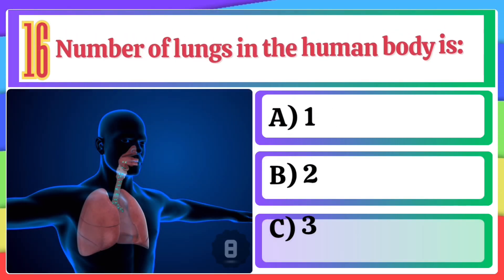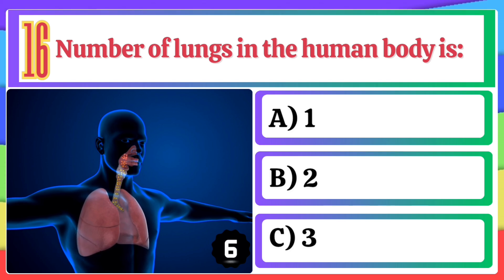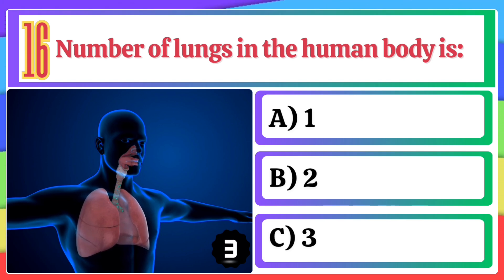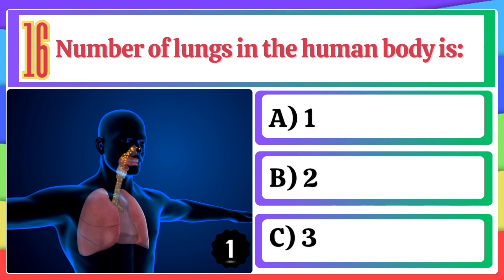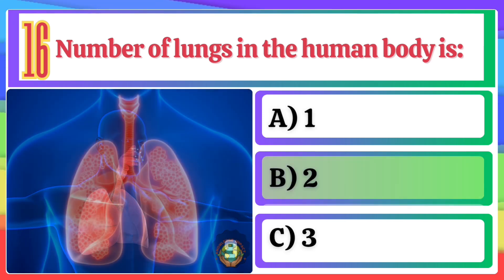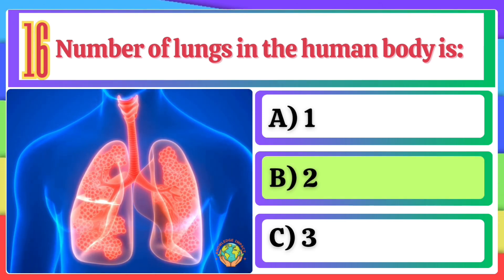Number of lungs in the human body is: A) 1, B) 2, C) 3. The correct option is B, 2.